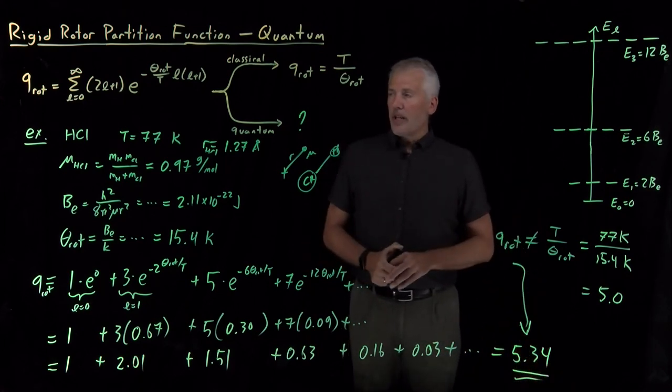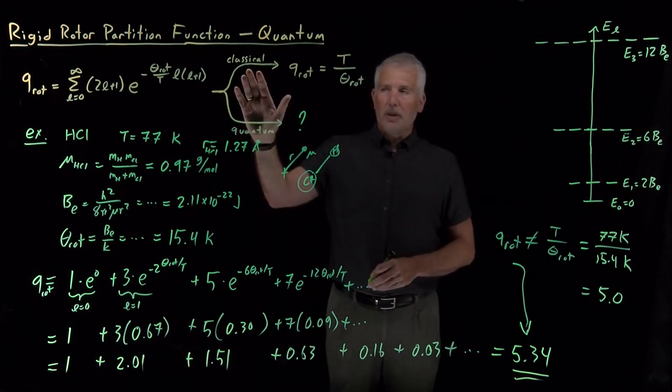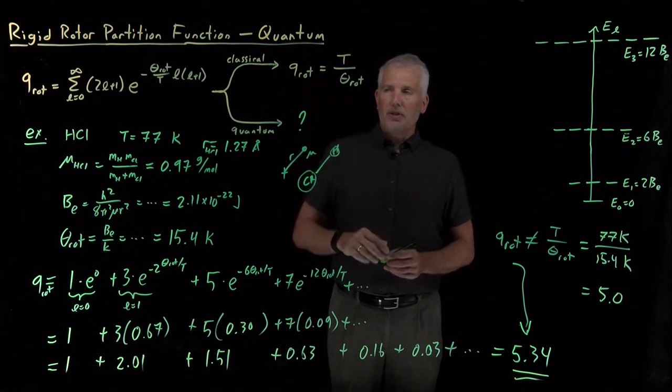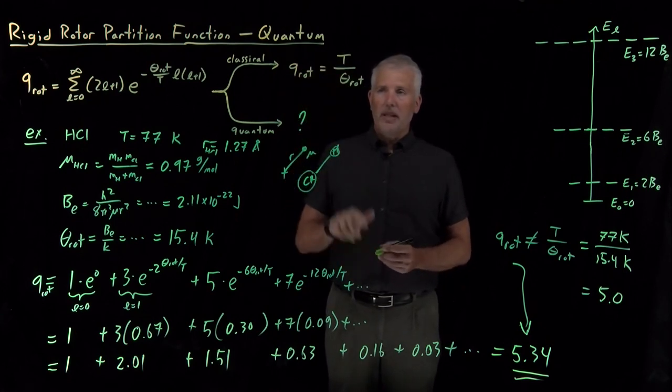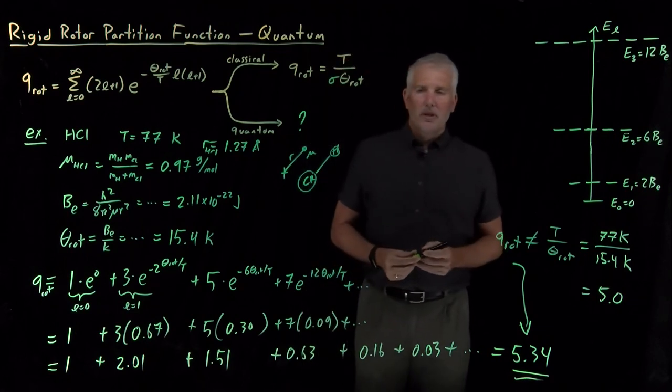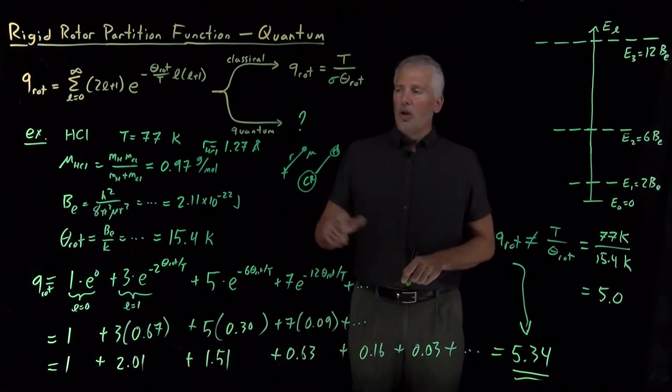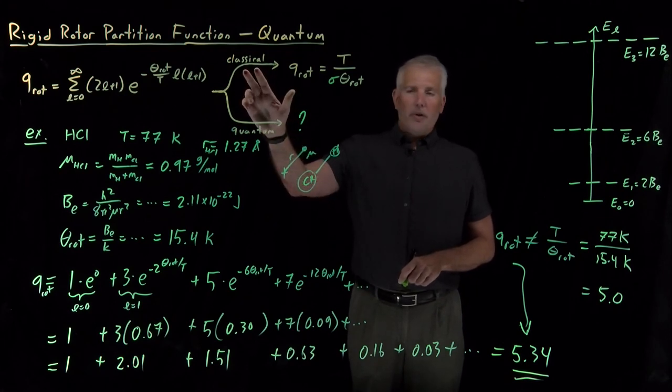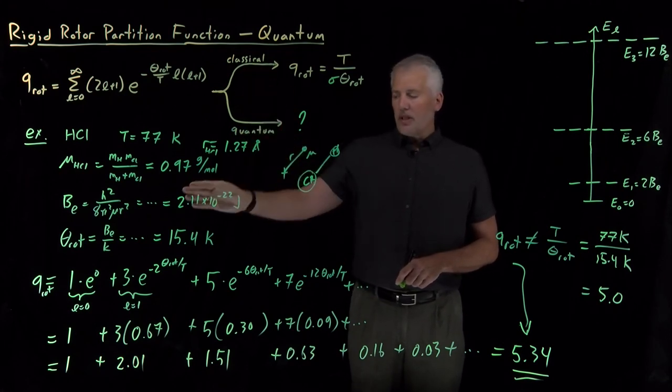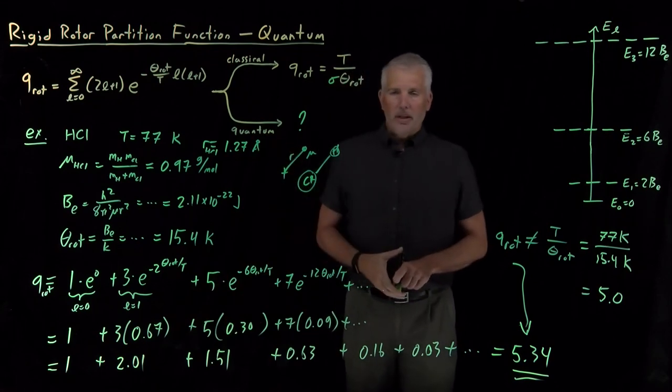So that tells us what we need to do in order to calculate the partition function. If the temperature is quite large compared to the rotational temperature, we can use this classical approximation, either the version for heteronuclear diatomics or more generally with a symmetry number if we want to be able to use homonuclear diatomics as well. Or if we are afraid we can't use the classical approximation, then there's no harm in just calculating the sum directly when we're under quantum mechanical conditions.